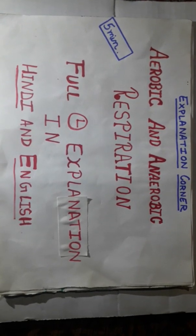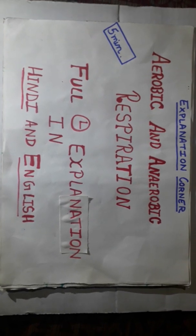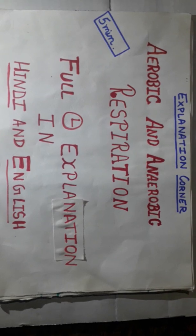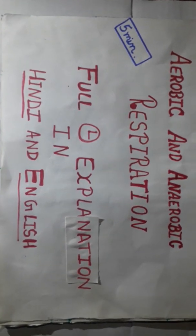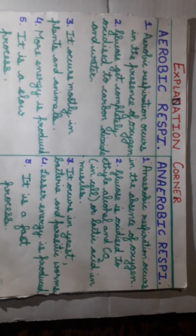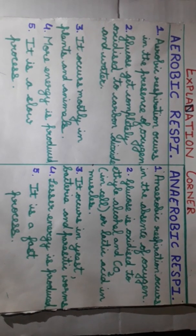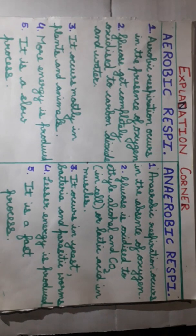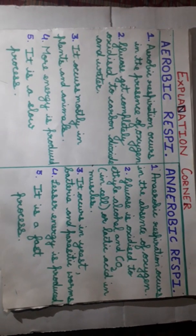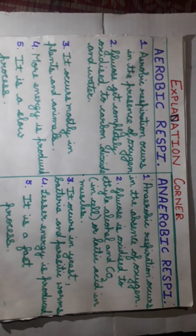Welcome to our channel Explanation Corner. Today's topic is aerobic and anaerobic respiration. I'll explain both types of respiration in Hindi and English — after this video you will never forget the difference between them. Let's get started. Aerobic respiration occurs in the presence of oxygen — matlab aerobic respiration oxygen ke honay par hi hoti hai.